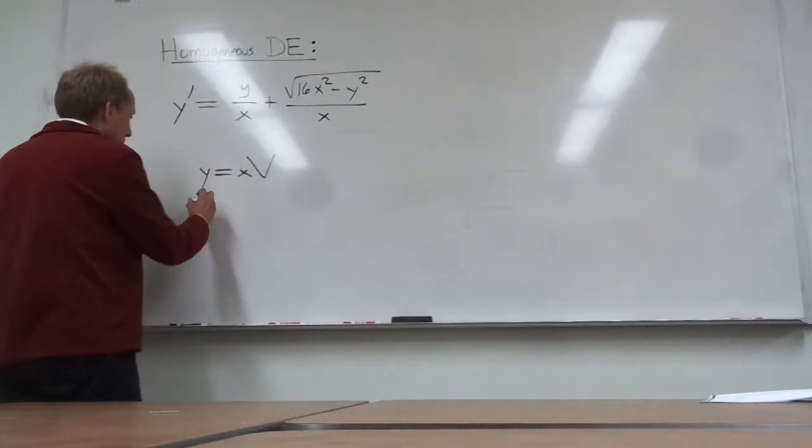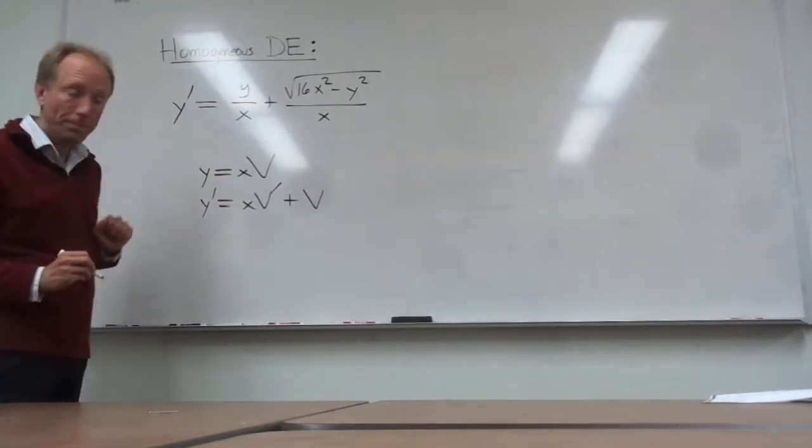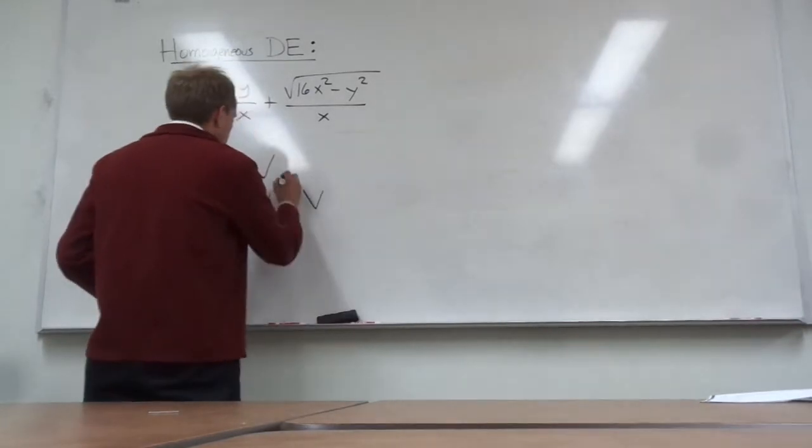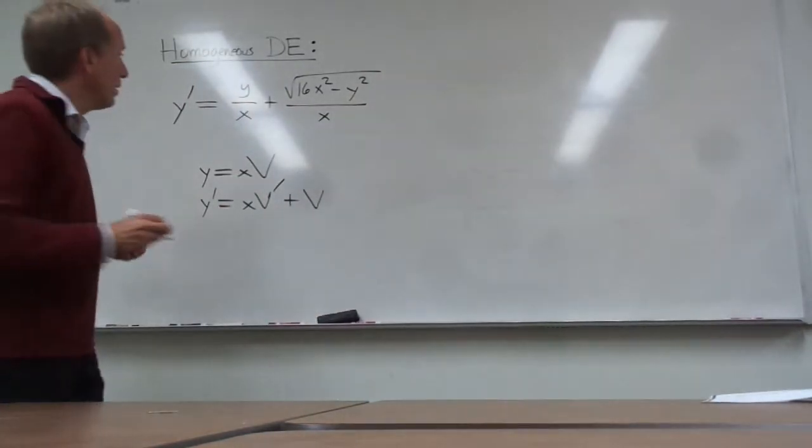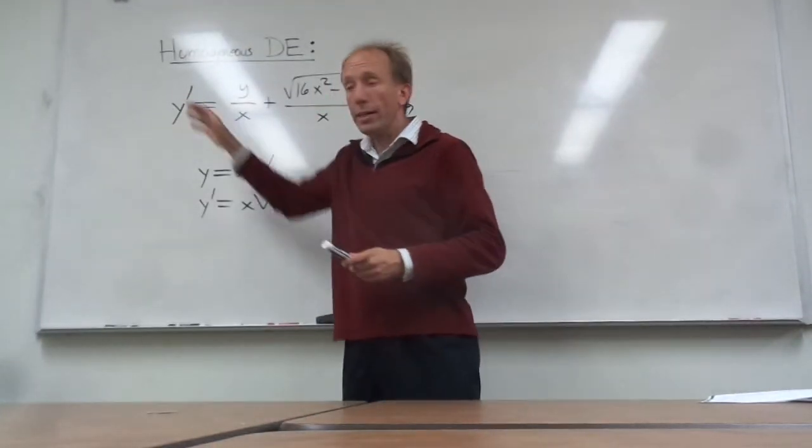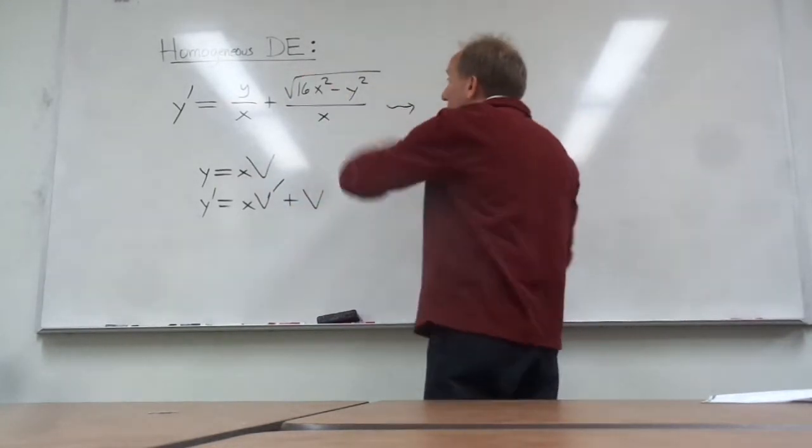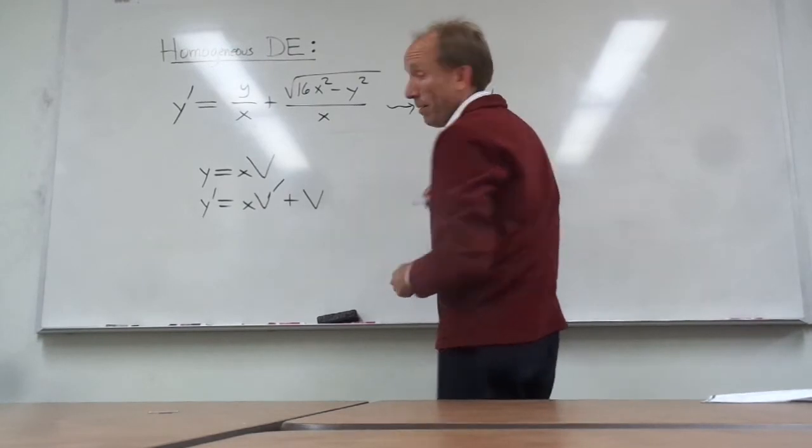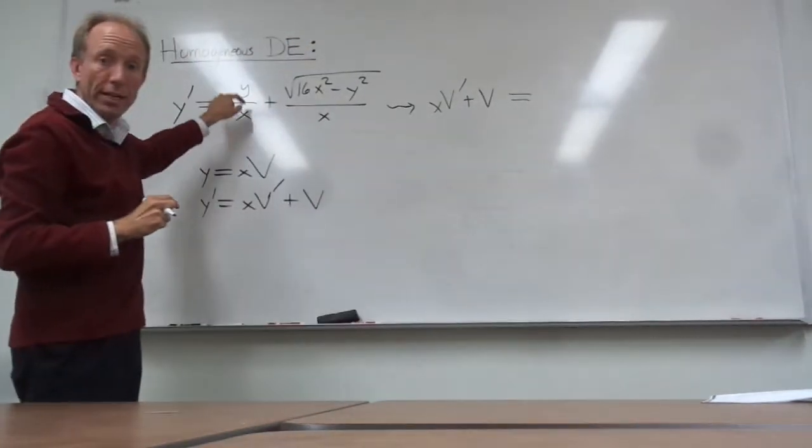It doesn't really matter what letter you use. But we are going to want to calculate the derivative of y. And I'm using the product rule to do that. So this is just the product rule. So we have y and y prime. And then the idea is just to go ahead and plug in everything we see here in terms of x and v. So on the left side, I have y prime. That becomes xv prime plus v. And then on the right side, notice I have y over x right here. Well, y over x is just v.